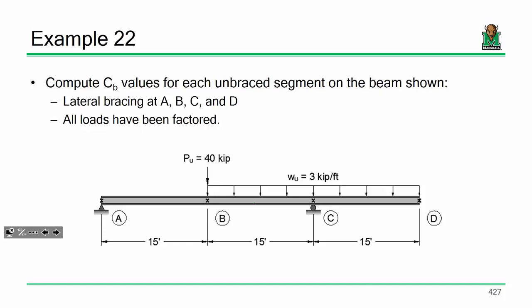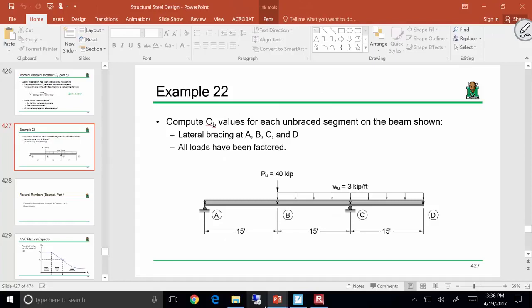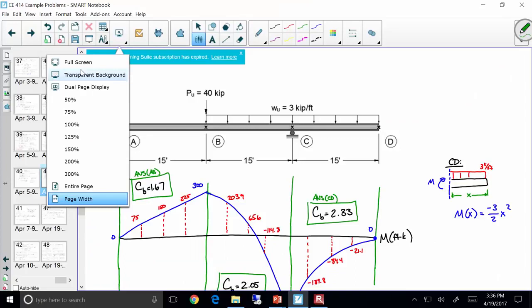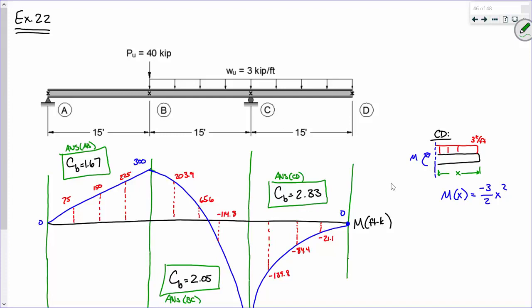We were working on the following example, or the example on this slide, when we ended last time. All the loads here shown are factored, so we didn't have to worry about that. When you compute C sub B, you need to be working with factored loads.